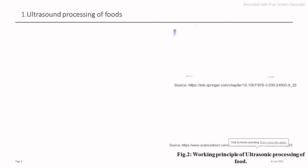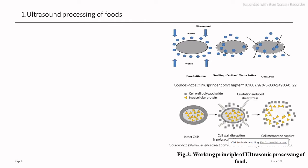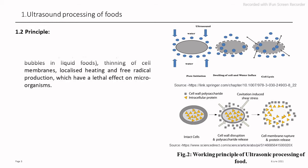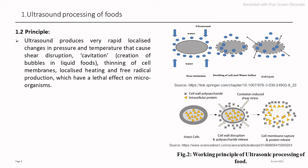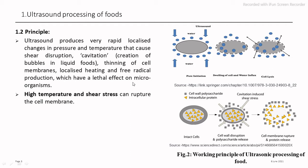What is the basic principle of ultrasound processing of food? There are two basic principles involved in ultrasonic food processing. The first is that when we expose food to ultrasonic waves, a number of free radicals are formed in the food. These free radicals have a lethal effect on microorganisms, meaning they act as antimicrobial agents against the microbial load.